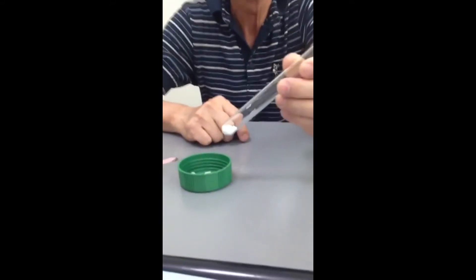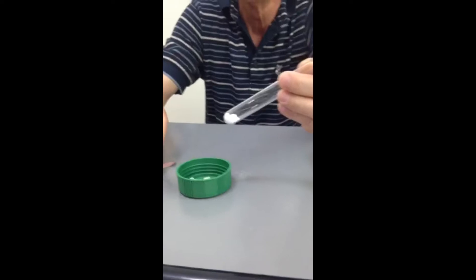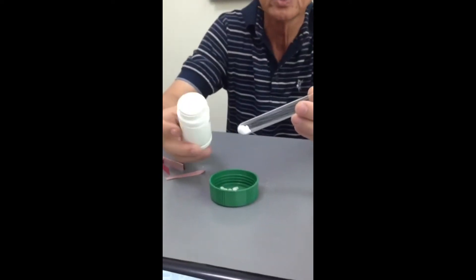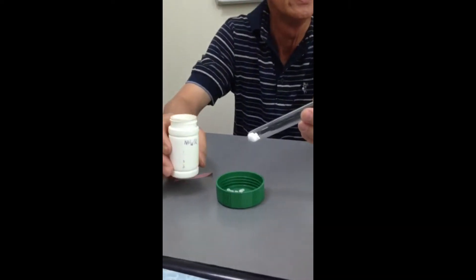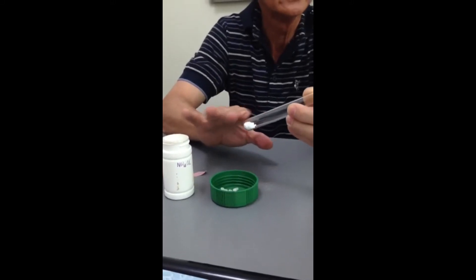Inside these test tubes we have white solid ammonium chloride, which is neither alkaline nor acidic.